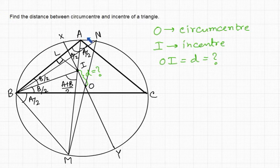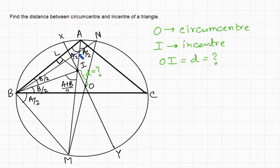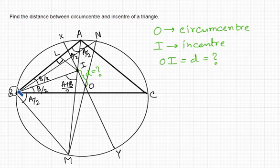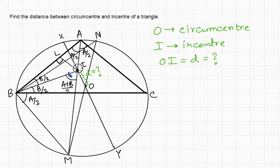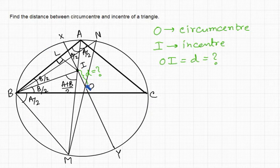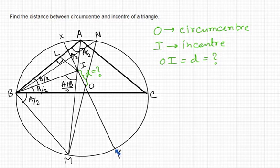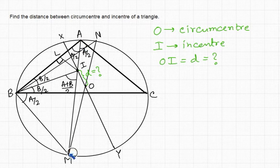In the construction, triangle ABC is the triangle we are considering. AM is the internal bisector of angle A, and BI is the internal bisector of angle B, so the angles are split as A/2 and B/2. These two bisectors meet at the incenter I of the triangle, and O is the circumcenter — the center of the circumscribed circle. We need to find the distance between I and O. The construction joins O and I, cutting the circle at points X and Y, and point M is joined with the circumcenter and extended to meet the circle at N.